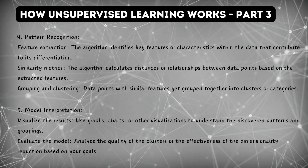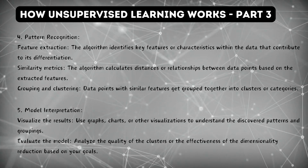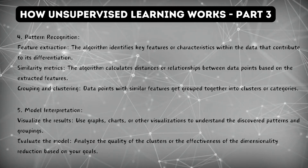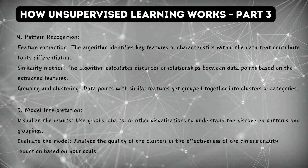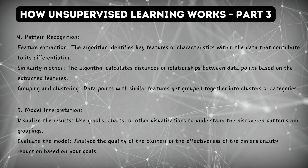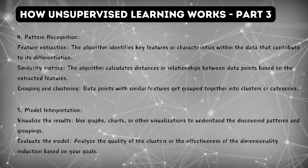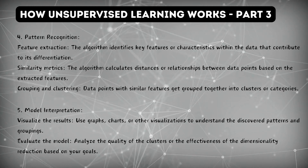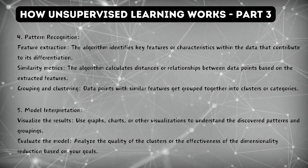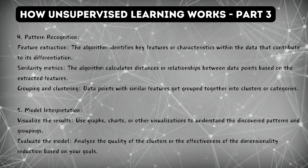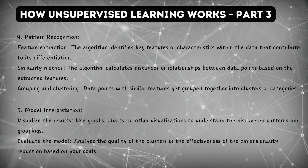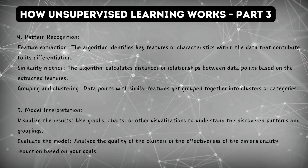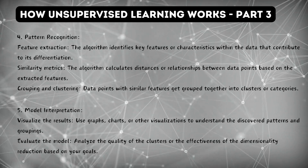Step number four, pattern recognition. Feature extraction: the algorithm identifies key features or characteristics within the data that contribute to its differentiation. Similarity metrics: the algorithm calculates distances or relationships between data points based on the extracted features. Grouping and clustering: data points with similar features get grouped together into clusters or categories. Step number five, model interpretation: visualize the results using graphs, charts, or other visualizations to understand the discovered patterns and groupings. Evaluate the model by analyzing the quality of the clusters or the effectiveness of the dimensionality reduction based on your goals.